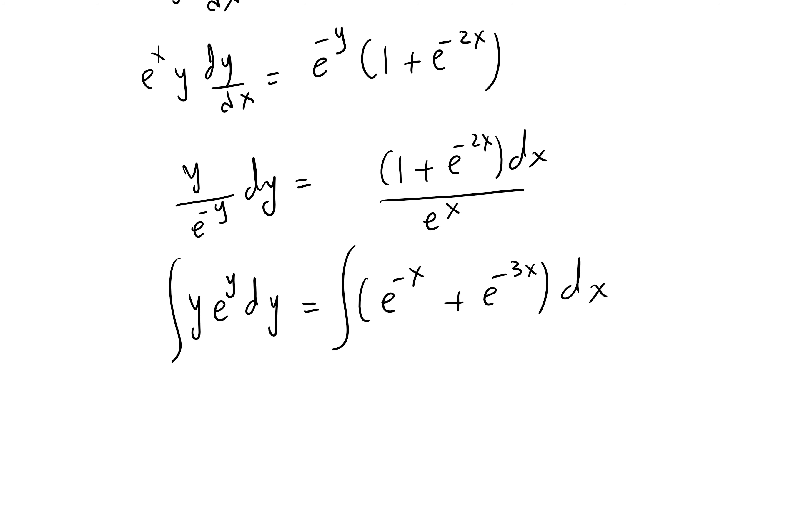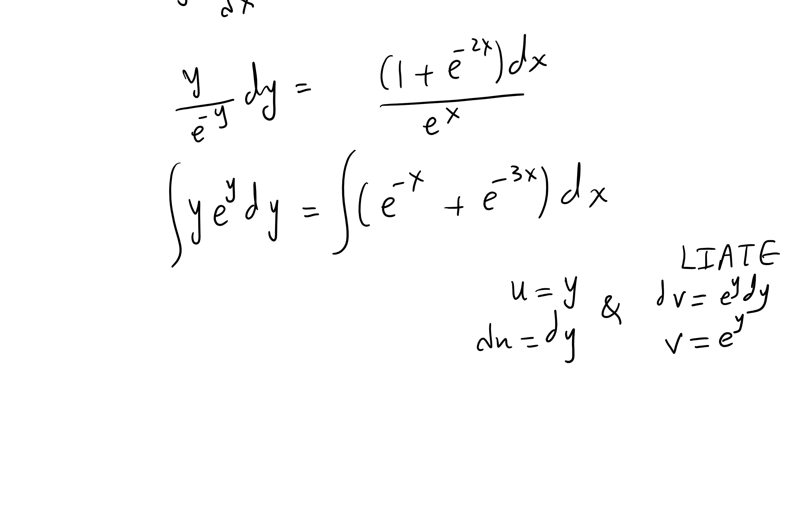Then we need to integrate the left hand side. Can be integrated using integration by parts. Maybe u equals y. I don't know if you remember LIATE, this trick. We have algebraic and we have exponential, so u equals this, du is dy, and dv is e^y dy, so v equals e^y. UV minus the integral of v du. And this is negative e^(-x), negative 1 over 3 times e^(-3x) plus c.